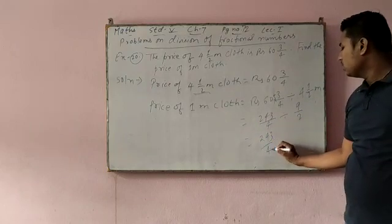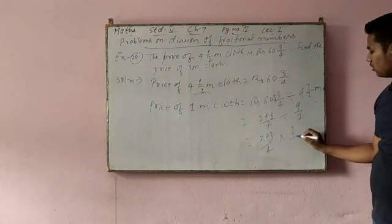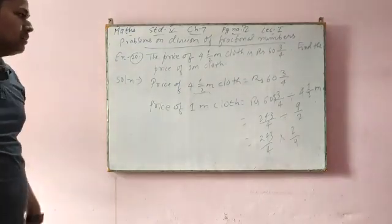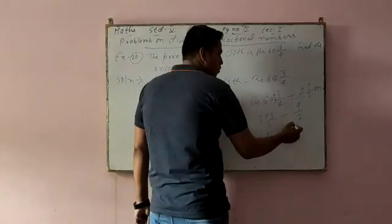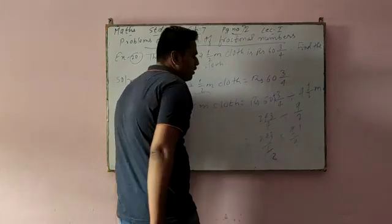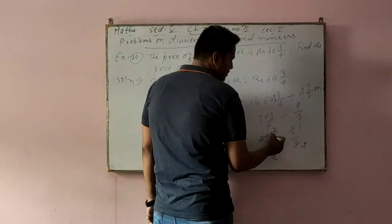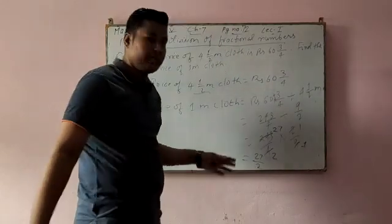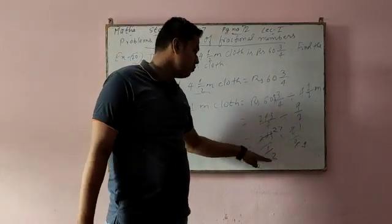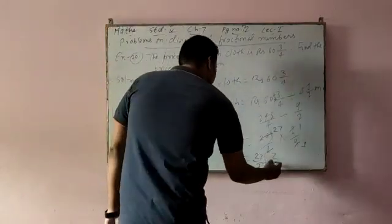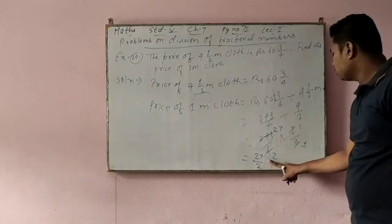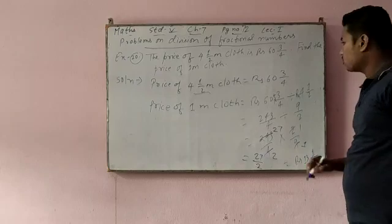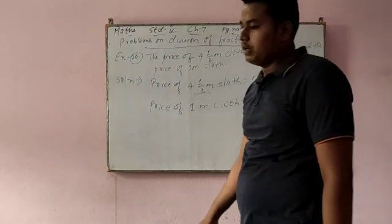Now, 243 by 4, this divide will change into multiply. This 2 will go up, this 9 will come down. Whenever divide is there, you have to change the second number. 2 times 1 is 2, 2 times 2 is 4. 9 times 1 is 9, 9 times 2 is 18, 9 times 7 is 63. 27 into 1 is 27, 2 into 1 is 2. After crossing and multiplying numerator with numerator, we got 27 by 2 rupees. Now, change it into mixed fraction. So cost of 1 meter cloth is rupees 13 and 1 by 2 paise.